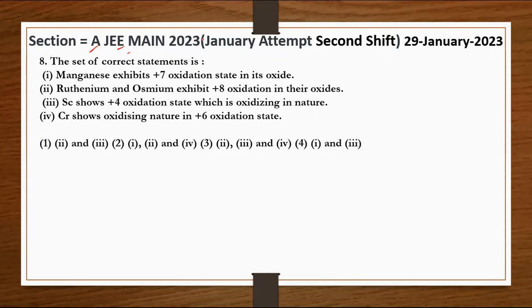Section A, JEE MAINS 2023, January attempt, second shift, 29 January 2023 का paper है। हमारे पास question number eight है। The set of correct statements is - हमें बताना है कि set of correct statements क्या है। चार statements दिए हैं और ये चार options इसके दिए।